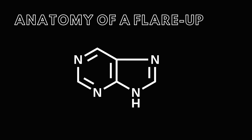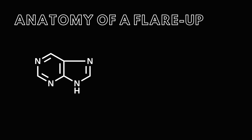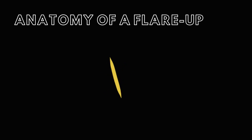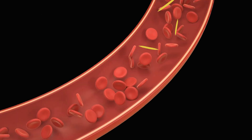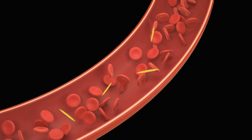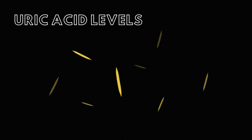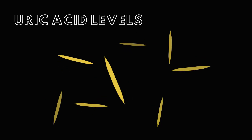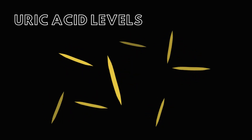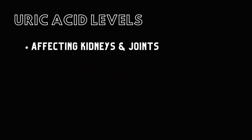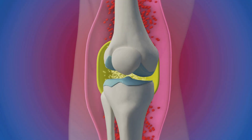Gout happens when purines — substances found in many foods and tissues — get broken down into uric acid. Uric acid is usually filtered out of your blood by your kidneys, but sometimes they don't quite keep up, allowing uric acid levels to soar. When that happens, uric acid forms tiny, needle-shaped crystals, causing trouble in both your kidneys and your joints. These crystals end up in your joints' synovial fluid, sparking painful gout flare-ups.